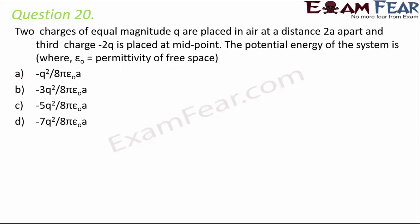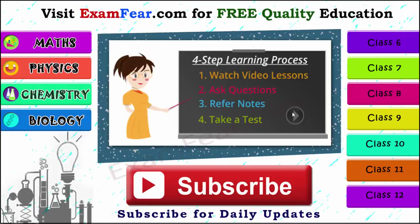Question number 20: two charges of equal magnitude Q are placed in air a distance 2a apart, and a third charge −Q is placed at the midpoint. The potential energy of the system is to be calculated. However, the solution is not completed in this video.